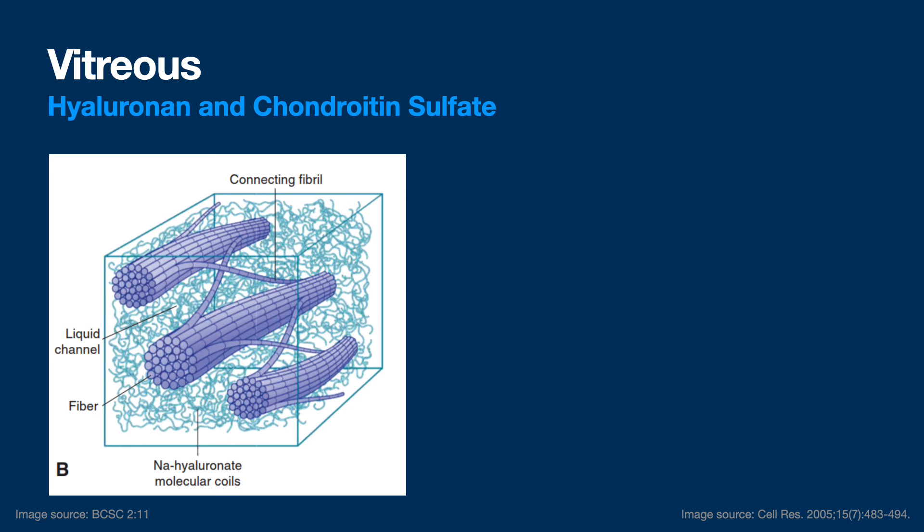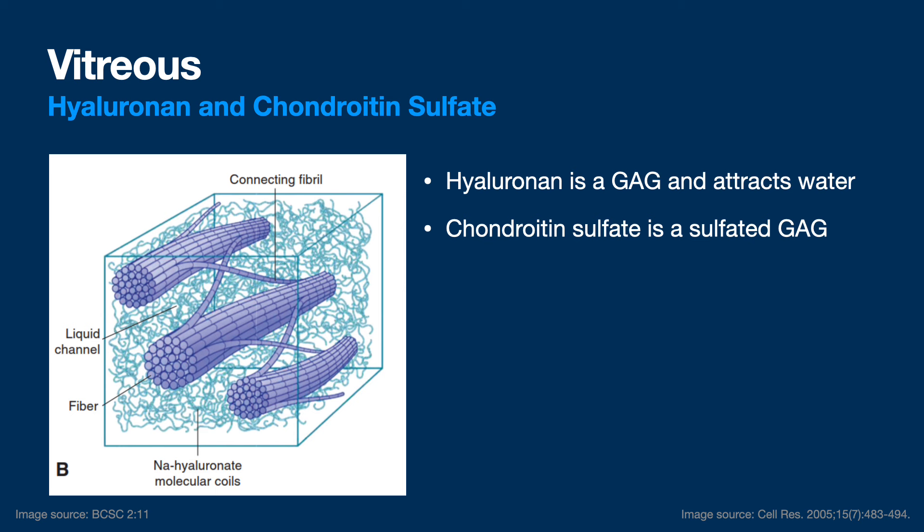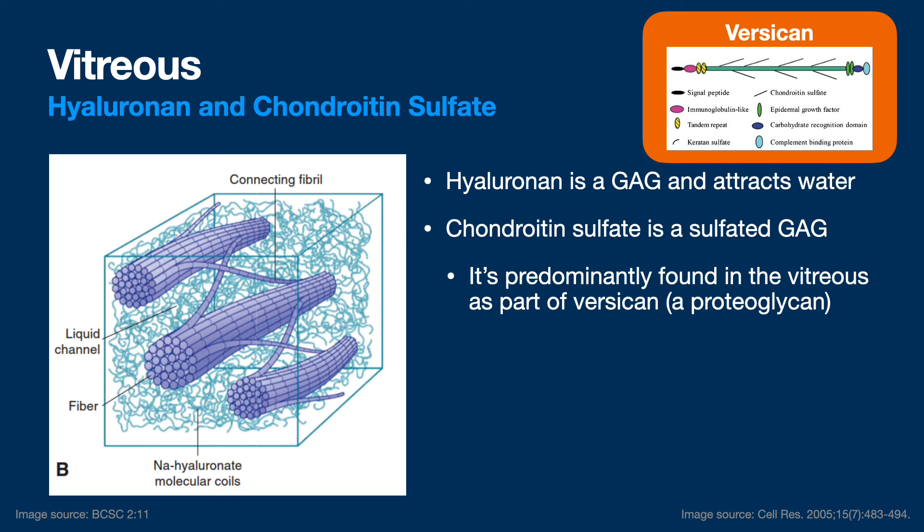Most of these pictures are from the BCSC or clinical photos. Hyaluronic acid is negatively charged. GAGs used to be called mucopolysaccharides — they're mostly negative and they attract water. The GAGs are mostly sulfated except hyaluronic acid, which is non-sulfated. There are four big groups. Hyaluronic acid attracts water and holds lots of water. Chondroitin sulfate is a sulfated GAG, and when it's in the vitreous, it's part of something called versican.